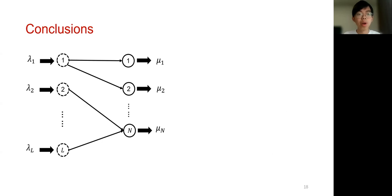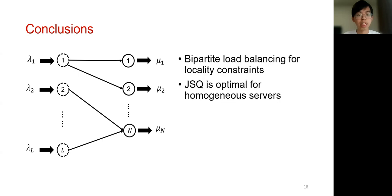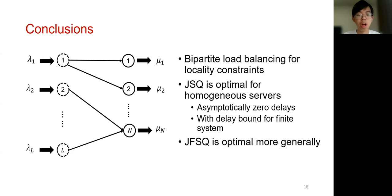To conclude this work, we introduce bipartite load balance model to study locality constraints, and we show that when the underlying bipartite graph is well-connected, JSQ is optimal for homogeneous servers because it can achieve asymptotic zero delays. We also provide the delay bound to bound deviation. For the general case with heterogeneous servers, we show JFSQ can obtain the optimal mean response time. So that's all for this talk, and thank you so much for listening. Keep safe and hope you can enjoy reading the paper. Thank you so much.